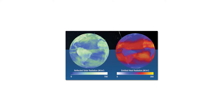The Earth reflects quite a bit of energy. To the left is a view of reflected solar radiation, in watts per meter squared. We can see the Earth reflects energy where there are clouds — clouds are very important reflectors — and where there are deserts. The Earth also emits thermal radiation, as shown on the right, emitted from regions where there are no clouds and from very hot desert regions. So energy comes in from the Sun, the Earth reflects some to space, and emits some as thermal radiation.